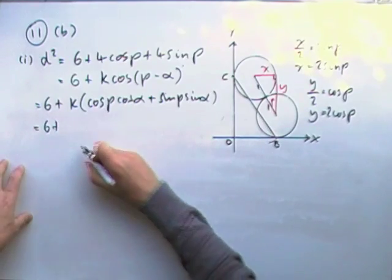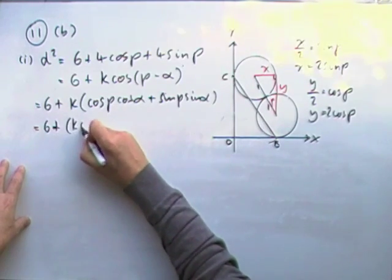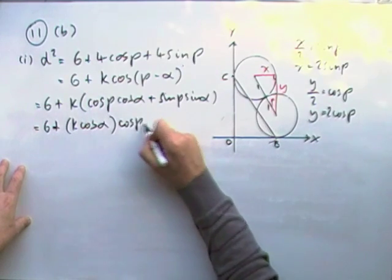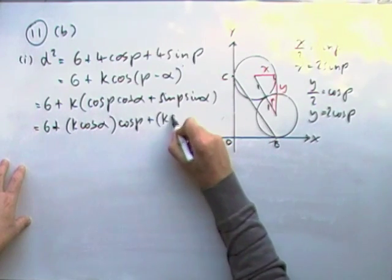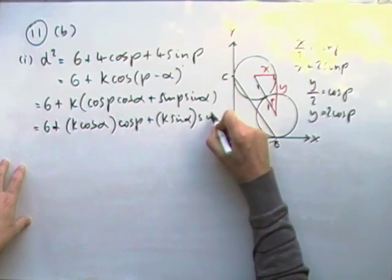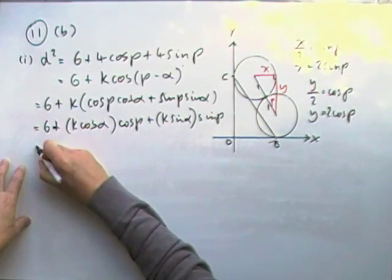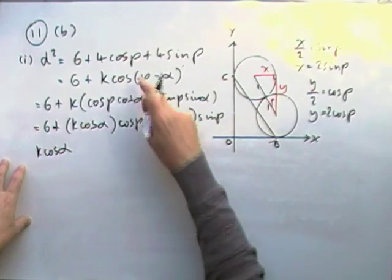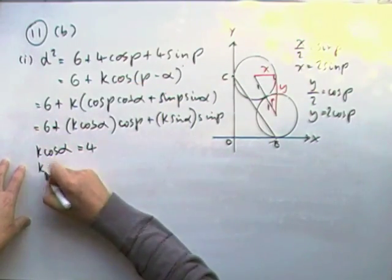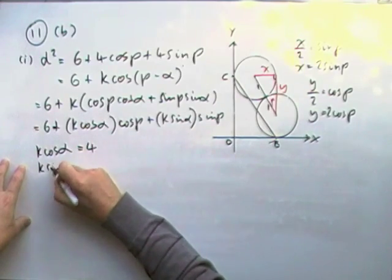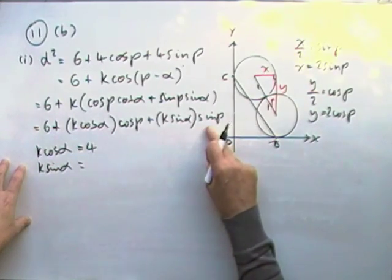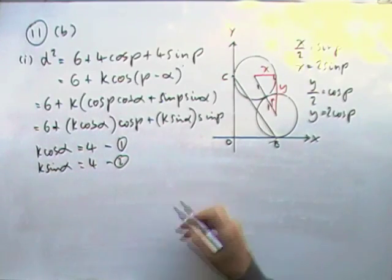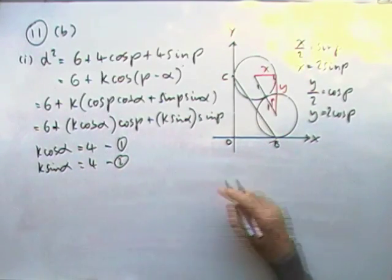Let's expand that out. So 6 plus K cos alpha, extracting and emphasising the coefficients of cos P, plus K sin alpha of sin P. Equating the coefficients, K cos alpha is the coefficient of cos P. The coefficient of cos P is 4, so K cos alpha is 4. K sin alpha is the coefficient of sin, the coefficient of sin is 4, so that's also 4. So I've got these two simultaneous equations. Standard techniques for that.